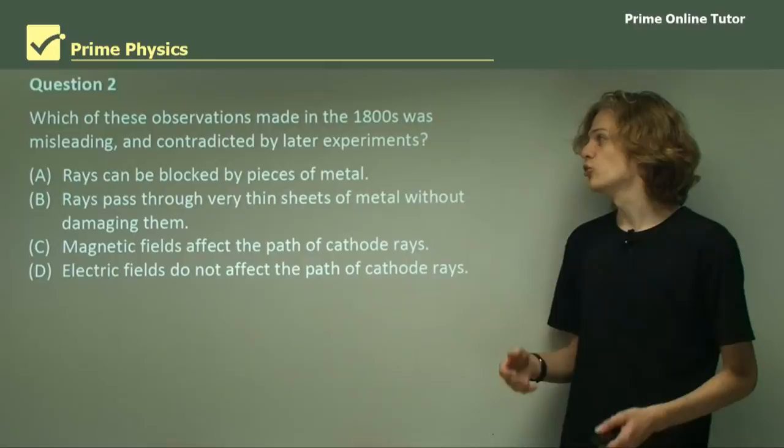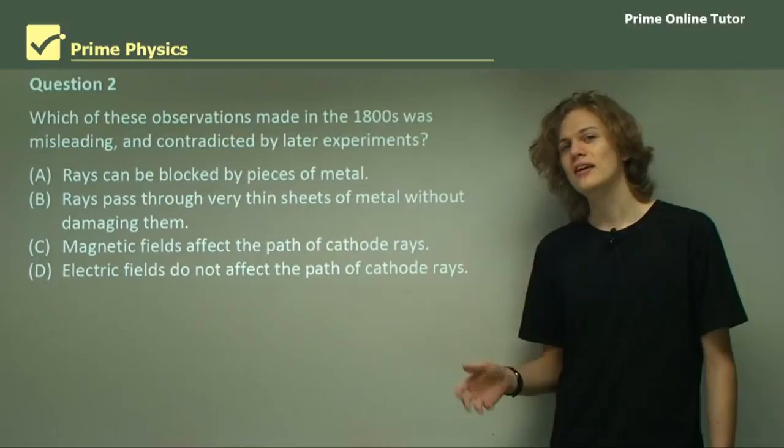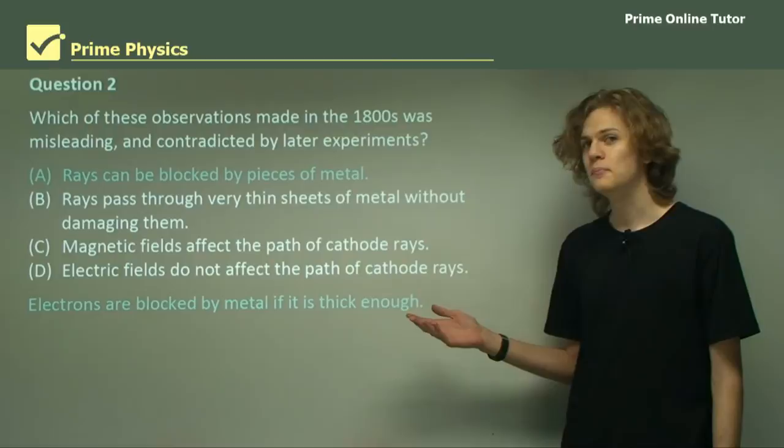Question 2. Which of these observations made in the 1800s was misleading and contradicted by later experiments? And so we can solve this question by knowing that cathode rays are made of electrons. So let's go through the options.